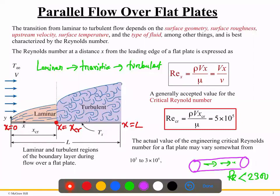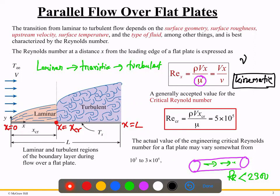Alternatively, you can write the Reynolds number as Re_x = V·x / ν, where ν (nu) is the kinematic viscosity, defined as dynamic viscosity divided by density. These two forms are equivalent — whichever information is given in the problem, use the appropriate formula.